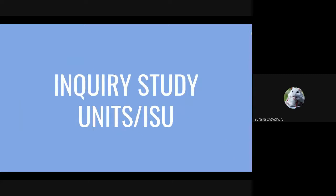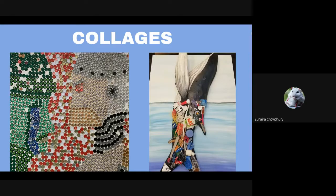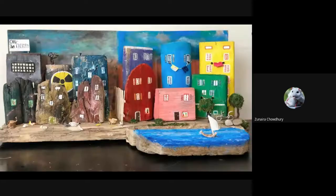Every Cyber Arts student is required to do two inquiry study units per year. They give students a chance to reach outside their comfort zone and try new techniques. You get a month to create the art piece that you desire to create, and then you present it to your class. Students have created collages about the environment — the one on the left shows mother nature crying about humans taking her for granted and over-producing technology, while the one on the right shows the problem with plastic pollution in our oceans, which negatively affects marine life. Other students have created buildings for their ISUs; this example symbolizes the difference between a healthy and polluted community.